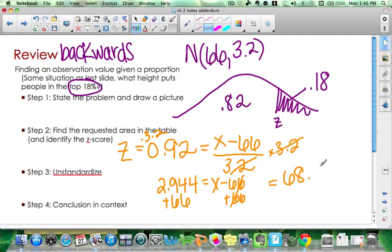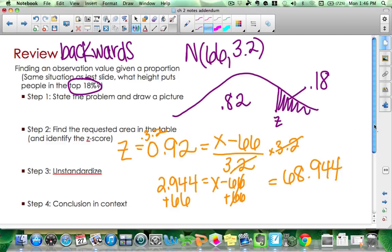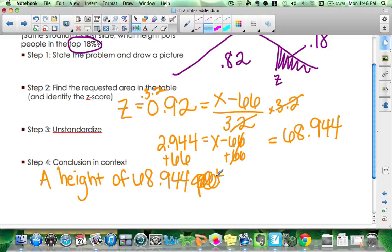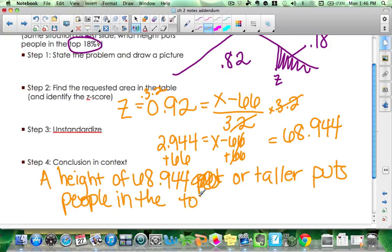That gives you 68.944. So my conclusion, a height of 68.944 puts people, I'm going to say we're taller, puts people in the top 18%.